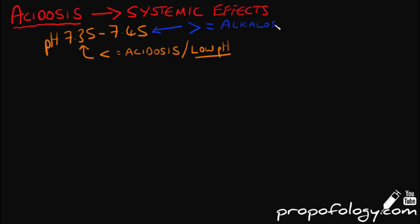So acidosis is excessive blood acidity caused by an overabundance of acid in the blood or a loss of bicarbonate from the blood, which is a metabolic acidosis.